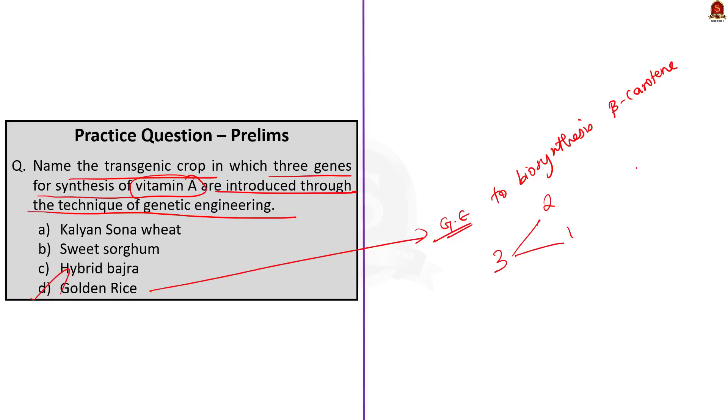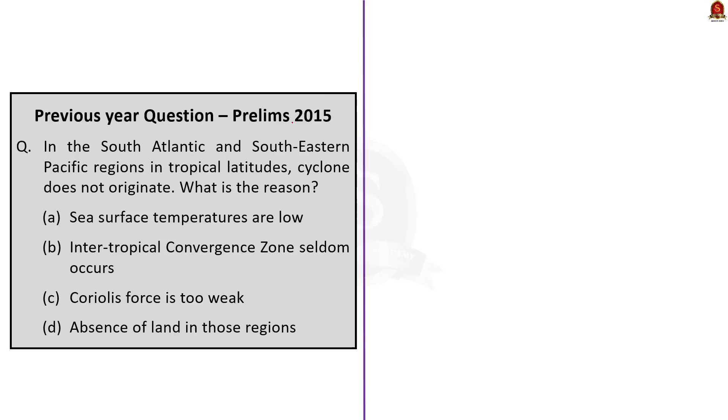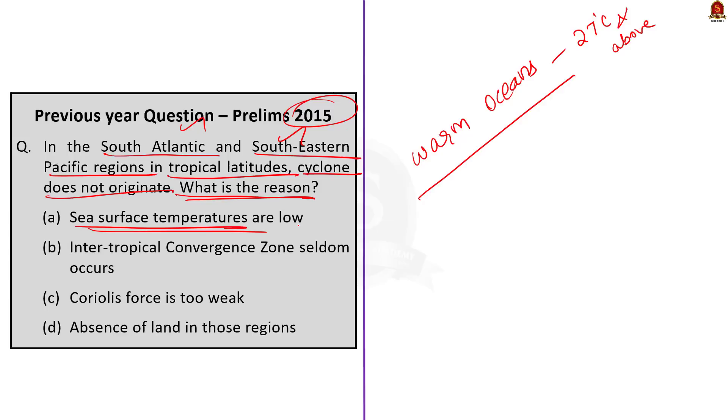Question number two. See, this is a prelims question from 2015. In the South Atlantic and South Eastern Pacific regions in the tropical latitudes, cyclone does not originate. What is the reason? See, the tropical cyclones originate and intensify over warm tropical oceans. As we saw in this discussion, large sea surface with temperature higher than 27 degree Celsius is one of the favorable conditions for the formation and intensification of tropical storms. Now, if we take the South Atlantic and South Eastern Pacific regions in tropical latitudes, in these areas, the sea surface temperature is cooler than the ideal temperature for tropical cyclone formation. This is even during the summer seasons in those areas. Because of this reason, the cyclones do not originate in South Atlantic and South Eastern Pacific regions in tropical latitudes. So, the correct answer is option A. Sea surface temperatures are low.